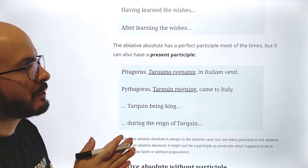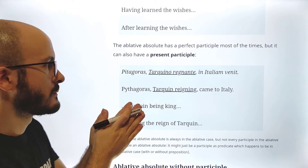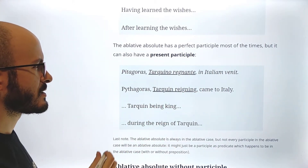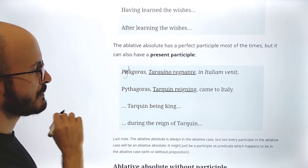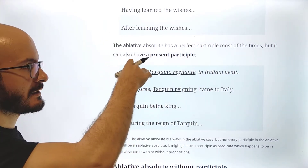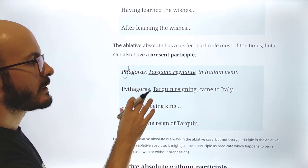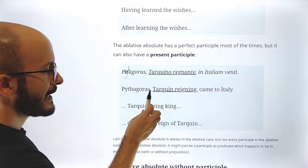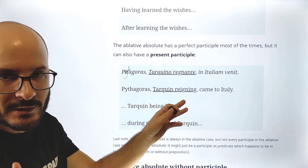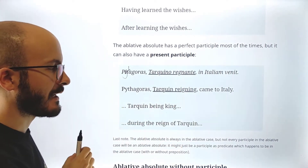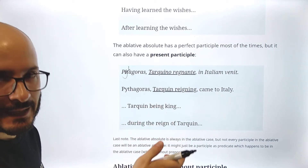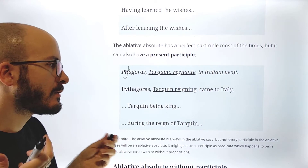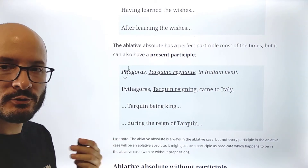The ablative absolute has a perfect participle most of the time, but it can also have a present participle. For example: 'Pythagoras Tarquino regnante in Italiam venit.' Here we have a present participle. The literal translation would be 'Pythagoras, Tarquin reigning, came to Italy.' A bit better: 'Pythagoras, Tarquin being king.' More natural: 'during the reign of Tarquin.' We have to be careful with the best translation given the context.